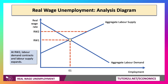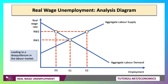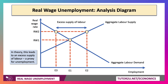Now, if wages are above that level — for example, higher at RW2 — then labour demand contracts and labour supply expands, leading to a disequilibrium in the labour market. There's an excess supply of labour, a proxy for unemployment, and that excess supply is shown by the distance E3 to E2. So that's real wage unemployment.